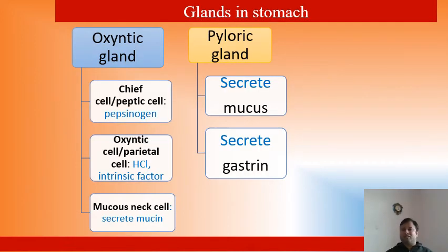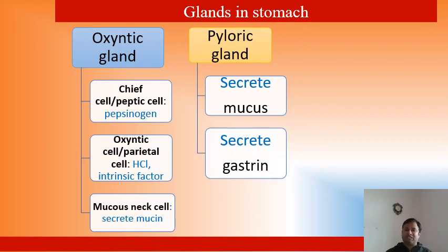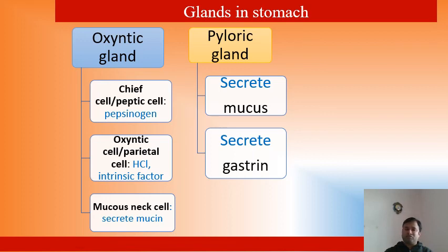The glands in the stomach: there are two types — oxyntic glands and pyloric glands. Oxyntic glands contain three types of cells: first, chief cells or peptic cells, which release the pepsinogen enzyme; second, oxyntic cells, also called parietal cells, which secrete hydrochloric acid and intrinsic factor; and third, mucus neck cells, which secrete mucin. The pyloric gland covers only 20% of the stomach, while the oxyntic gland covers 80%. The pyloric gland releases mucus and one hormone — gastrin — which is responsible for stimulating histamine, and histamine then triggers the release of hydrochloric acid.